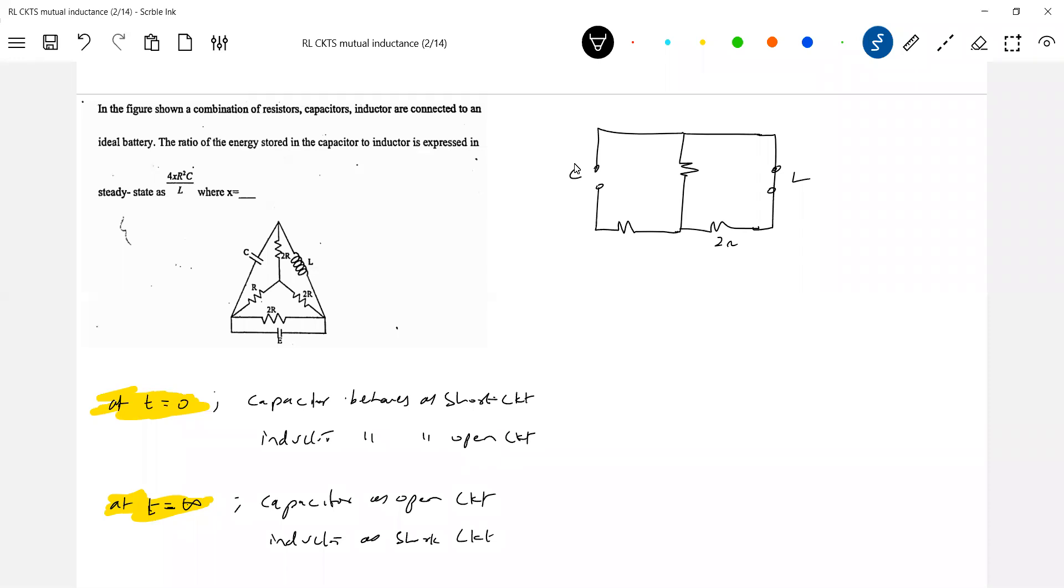So this is 2R. This is R. And 2R. And this is the EMF E. So what to calculate, potential drop across AB will be the drop across capacitor.